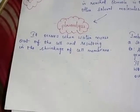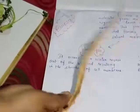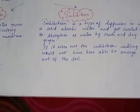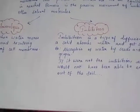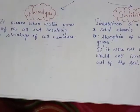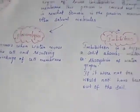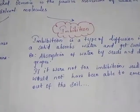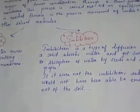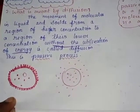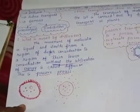Plasmolysis occurs when water moves out of the cell, resulting in the shrinkage of the cell membrane. Next one is imbibition. Plasmolysis is a type of osmosis, and imbibition is also a type of osmosis and diffusion. Diffusion is the movement of molecules or liquid or solid from the region of higher concentration to the lower concentration without any energy — that is called diffusion.